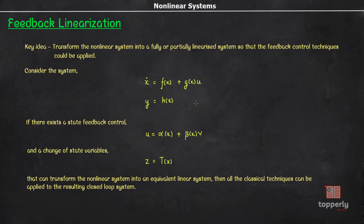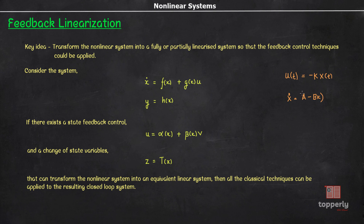The principal idea here is to cancel out nonlinearities in the system by choosing an appropriate control input u. This is similar to designing controllers for linear systems using state feedback control, where the control signal u(t) is obtained as a function of the state of the system. That is, u(t) is usually chosen as a function of state variable x. As a result, the system equations modify to x-dot = (A - BK)x(t), and the solution becomes x(t) = e^{(A-BK)t} x(0).